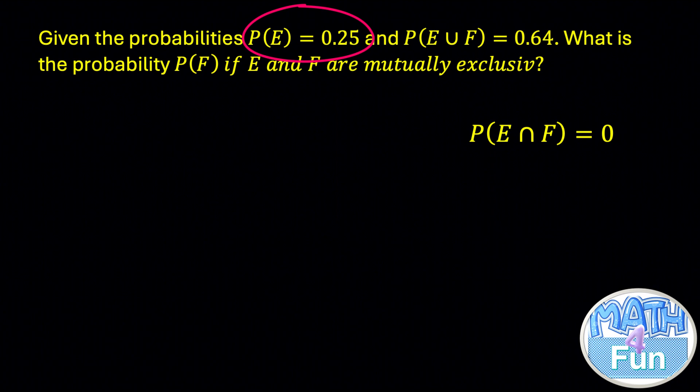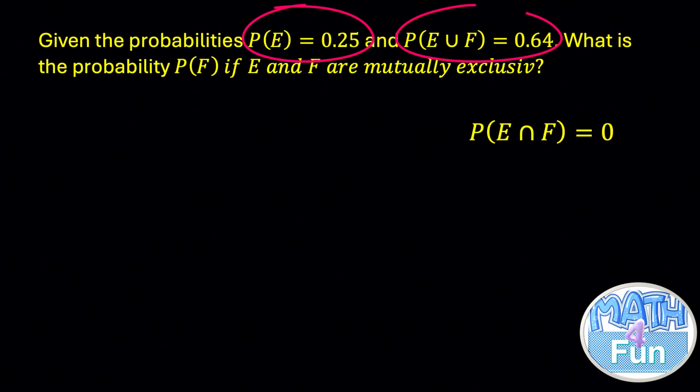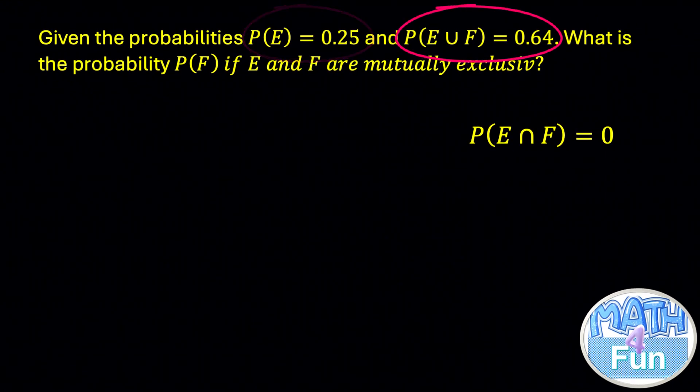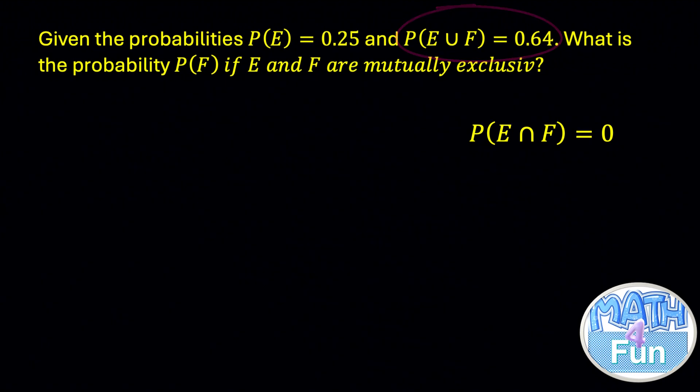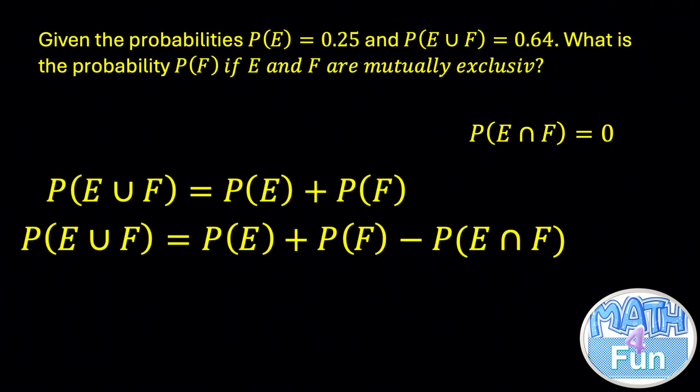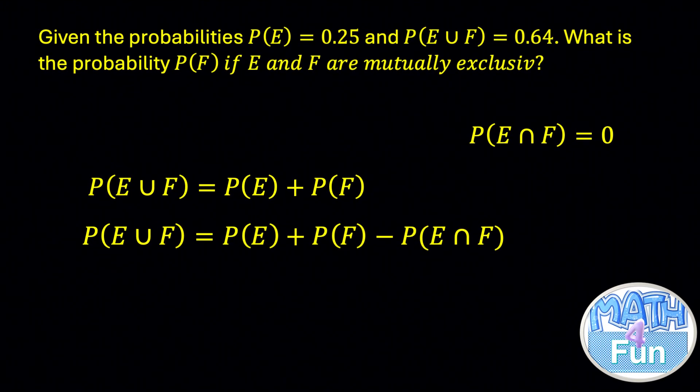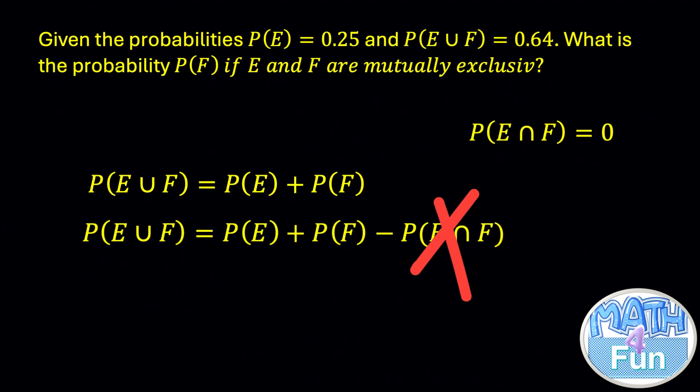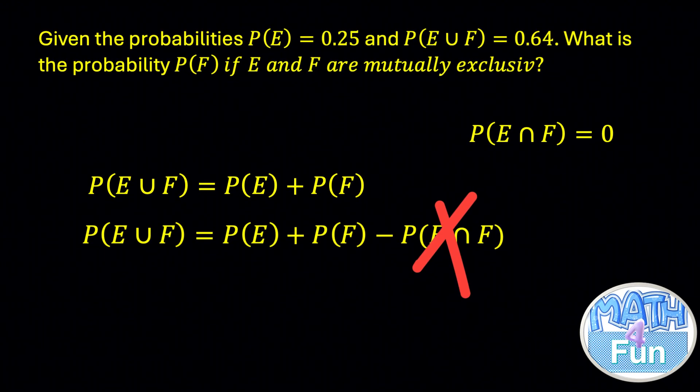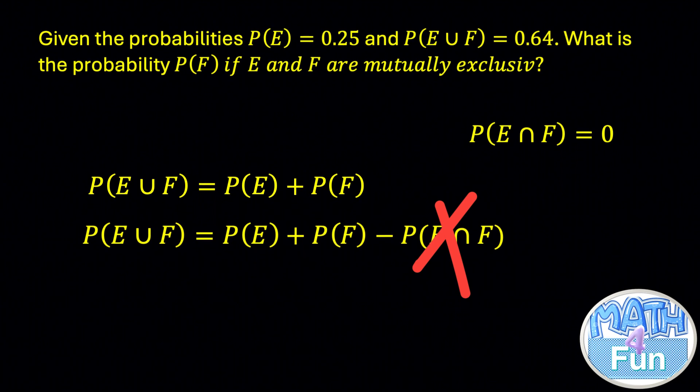Now we are given P(E) equals 0.25 and P(E union F) equal 0.64. Since E and F are mutually exclusive, then P(E union F) is going to be equal to P(E) plus P(F). We ignore the P(E intersection F) because it's equal to 0.